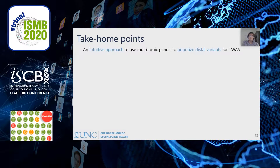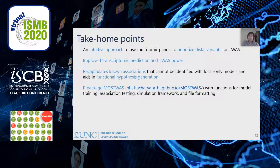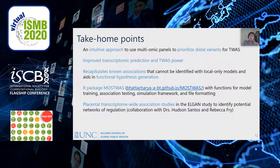To wrap up, MOSTWAS is an intuitive approach to use multiomic panels to prioritize distal variants for TWAS. An advantage of MOSTWAS is that its methodology allows for mediator models trained in external datasets to be imported to enrich eQTL panels that don't have multiomic data. MOSTWAS also gives improved transcriptomic prediction and TWAS power. We show that we recapitulate known associations that cannot be identified using local-only models, and the distal SNPs added last test aids in functional hypothesis generation. An R package for MOSTWAS is live online at GitHub, with functions for model training, association testing, simulation framework, and file formatting. We're currently using MOSTWAS in a series of TWAS in the placenta to identify potential networks of regulation relevant in developmental traits and disorders — a collaboration with Drs. Hudson Santos and Rekka Frye at UNC Chapel Hill, members of the ELGIN study.